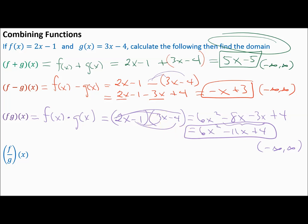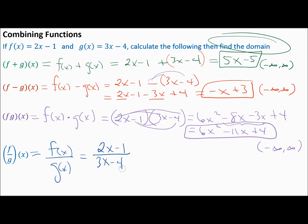For division, F divided by G of X is really just F of X divided by G of X. Write F of X in the numerator — 2x minus 1 — and G of X in the denominator — 3x minus 4. You would simplify if possible, but this does not simplify. You cannot cancel the x in the numerator with the x in the denominator.